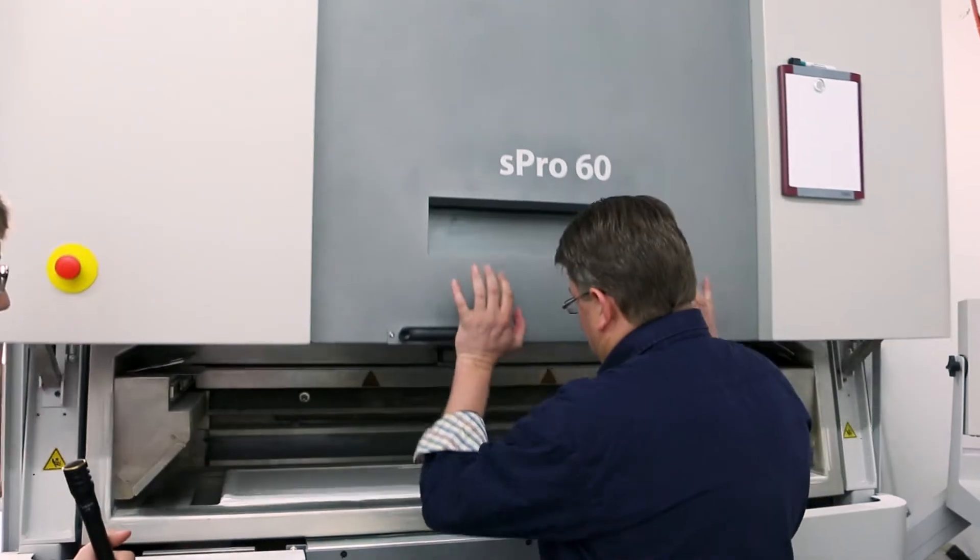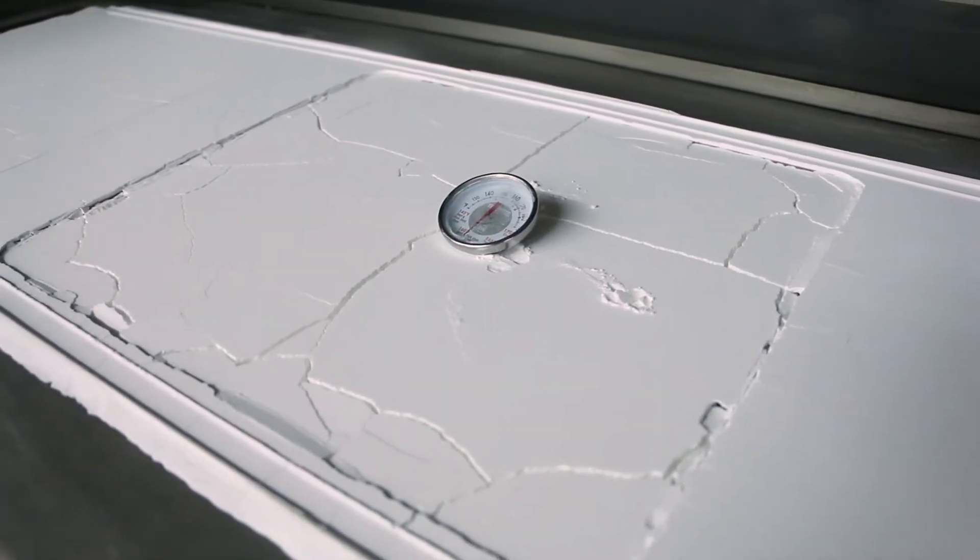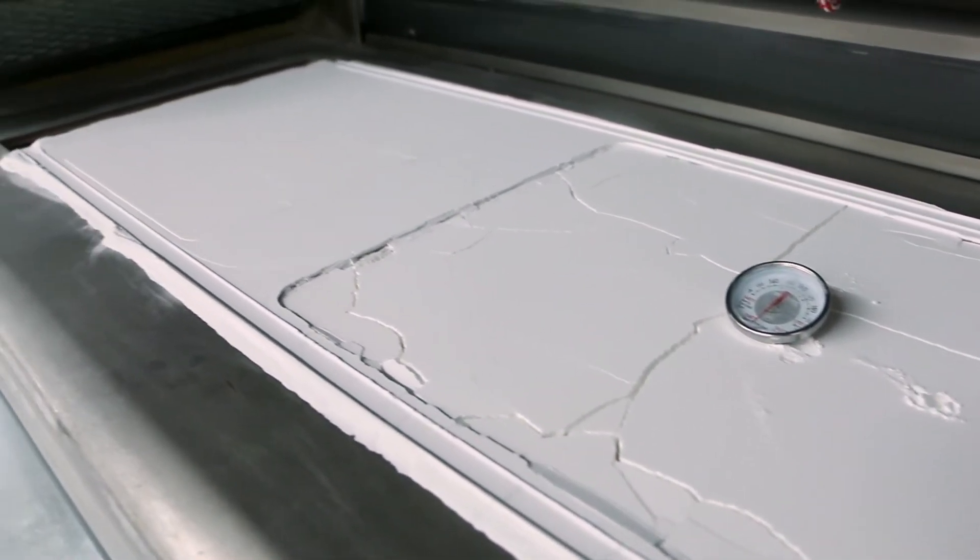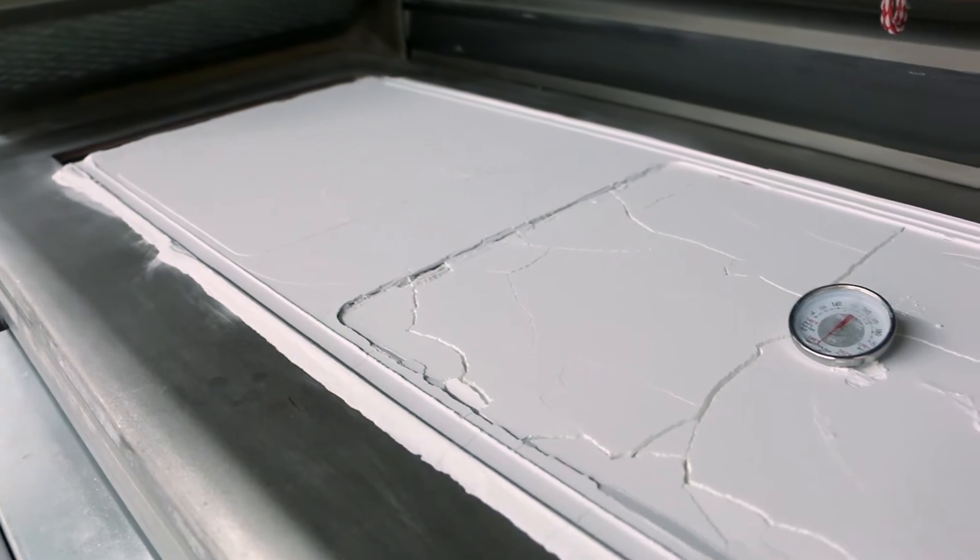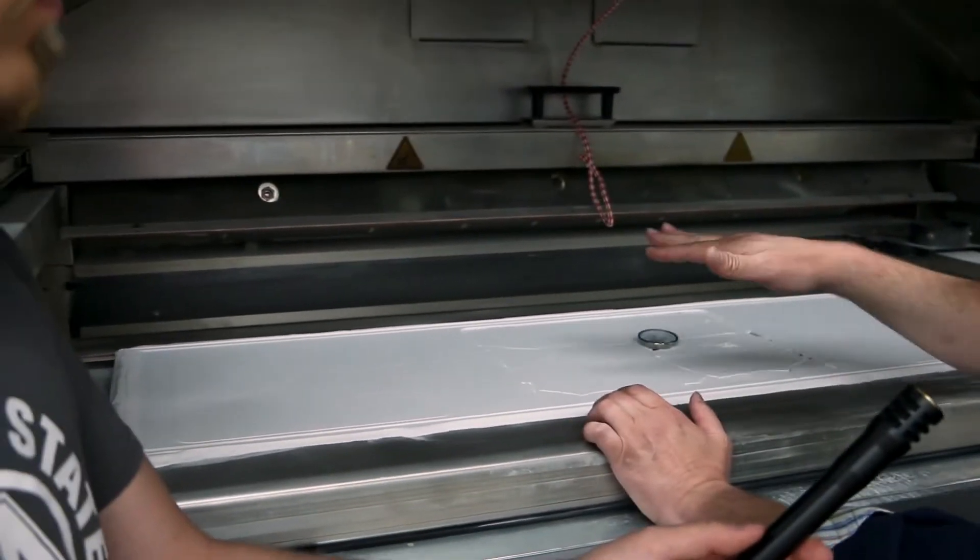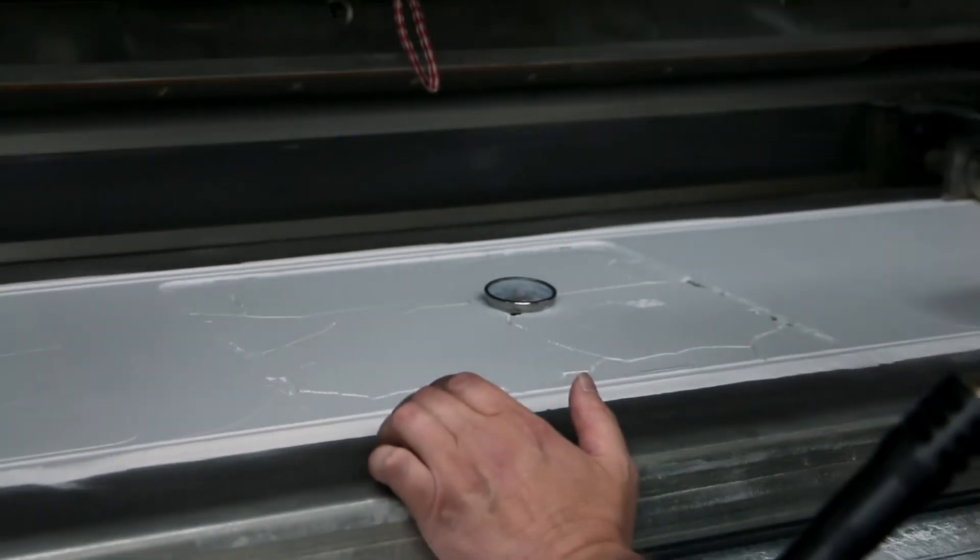Inside, we have a build chamber here in the center. We have a build inside here cooling right now, and we have feed chambers on either side. So each layer, the build chamber moves down 5,000ths of an inch, feed piston moves up, roller comes across and puts a nice even layer of material down. The next layer, the roller goes the other direction. So just back and forth, all in a hall.